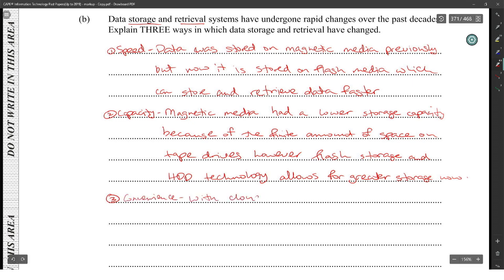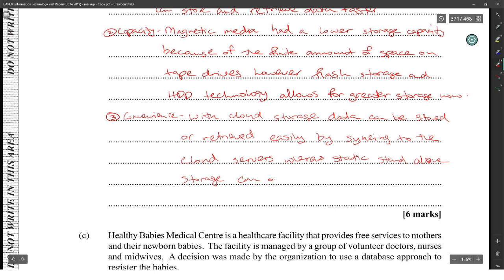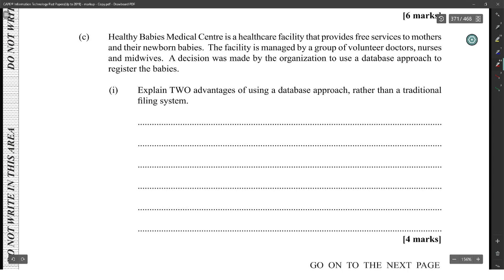Cloud storage — data can be stored or retrieved easily by syncing to the cloud server, whereas static random storage can only be saved in one location.